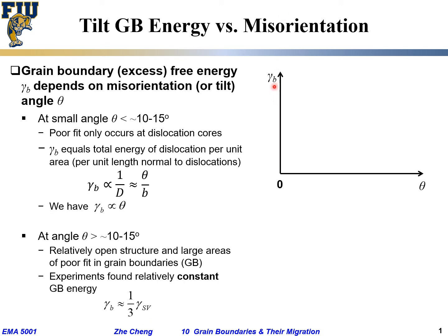If we plot gamma_b, the grain boundary energy, versus misorientation angle for these types of tilt boundaries, we start from zero — meaning perfect alignment gives zero grain boundary energy — then increase linearly initially, and then gradually reach a plateau. This transition between linear increase and plateau occurs at roughly 10 to 15 degrees. Beyond that, the grain boundary energy quickly approaches a constant value of about one third of the surface energy.